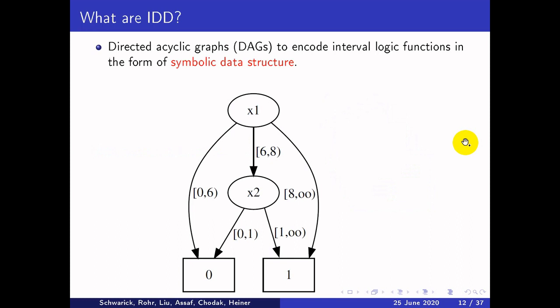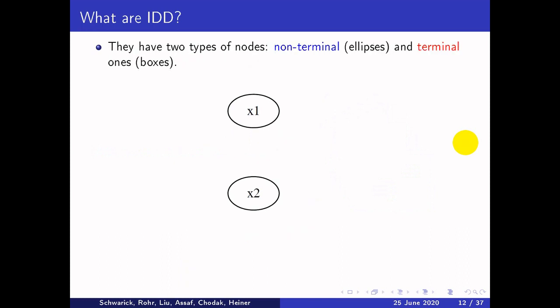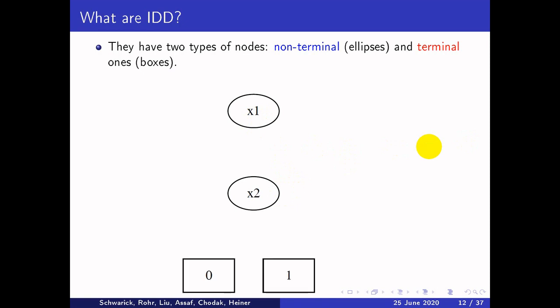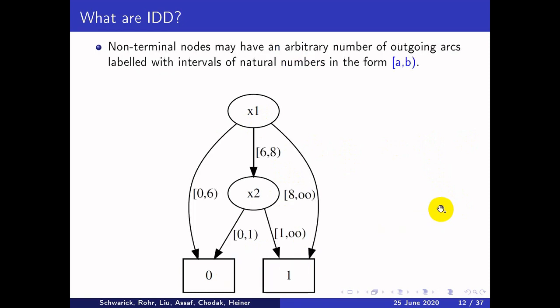Interval decision diagrams are directed acyclic graphs that encode interval logic functions in the form of a symbolic data structure. They have two types of nodes: non-terminal nodes in the form of ellipses, like X1 and X2, and terminal ones in the form of boxes — for example, terminal nodes 0 and 1. Non-terminal nodes may have an arbitrary number of outgoing arcs labeled with an interval of natural numbers in the form [A, B), where A is included in the interval while the upper bound B is not included.